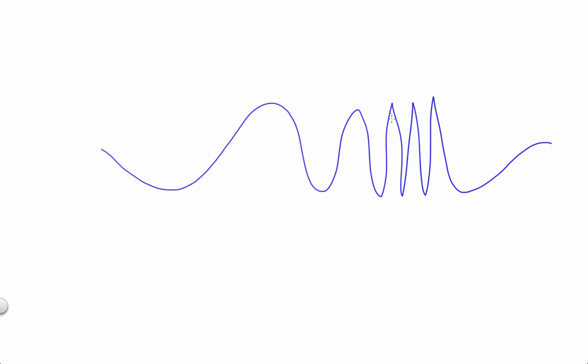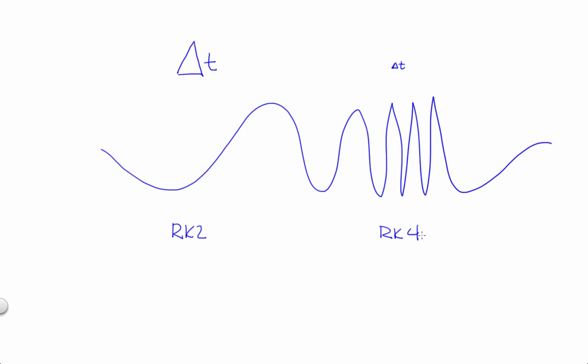Recall from the previous segment that it makes sense to adapt the time step as you go along in order to handle uneven landscapes. You can also adapt the method — for example, you could use second-order Runge-Kutta when things are smooth and then move to fourth-order Runge-Kutta if second-order isn't good enough. You could tell that a time step wasn't adequate by taking a step with it and then taking two steps at half that distance and comparing the results.